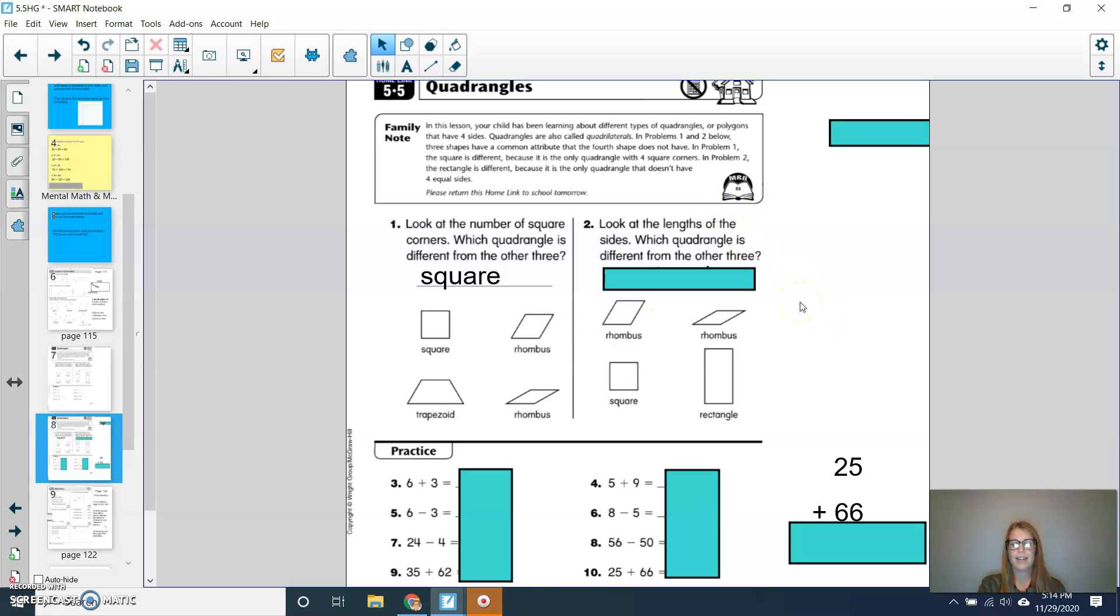And then let's look at number two. So this time we're looking at the length of the sides. So look at the size of the sides. Which quadrangle is different from the other three? And this time you should have said rectangle. Notice how the rhombus and the square, all four sides are the same length, but the rectangle, only two sides are the same length. And then the opposites, two sides are also the same length. Second graders, for the bottom practice, I'm going to ask that you solve each of these problems on your own, and then press play when you're ready to check. Press pause now.